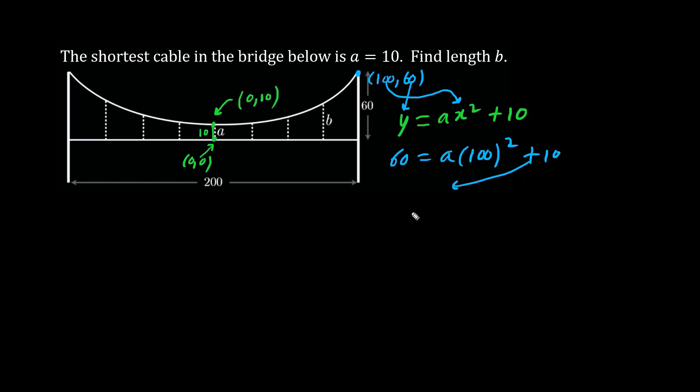60 minus 10 is 50, and 100 times 100 has 4 zeros. Dividing both sides by the coefficient 10,000, we have 50 over 10,000. We divide top and bottom by 50, which is 1 over 200. We have the a value.